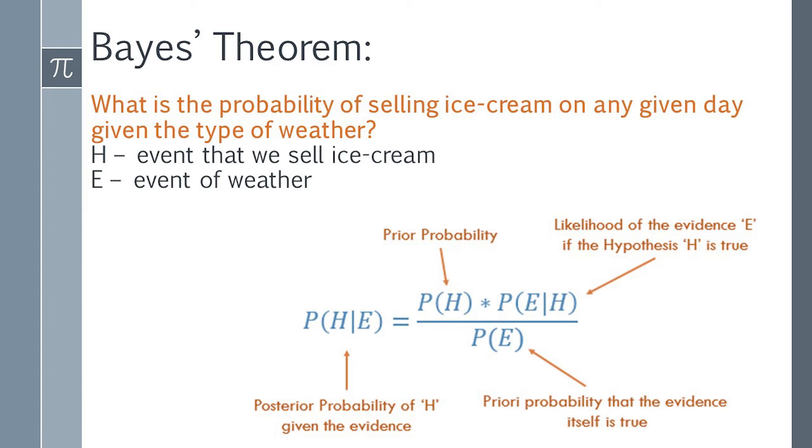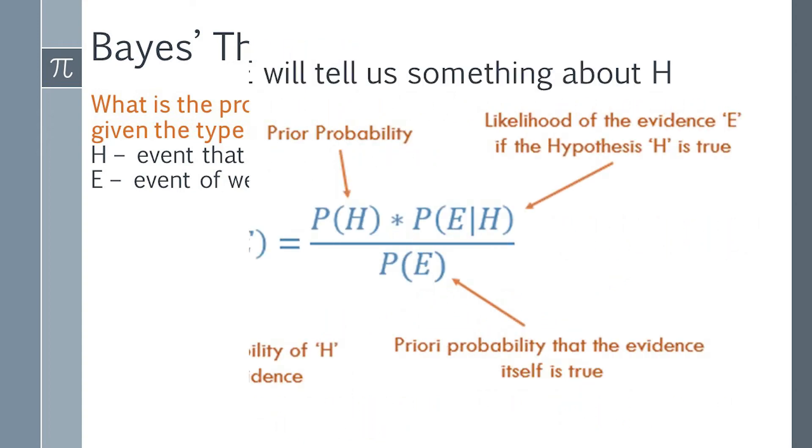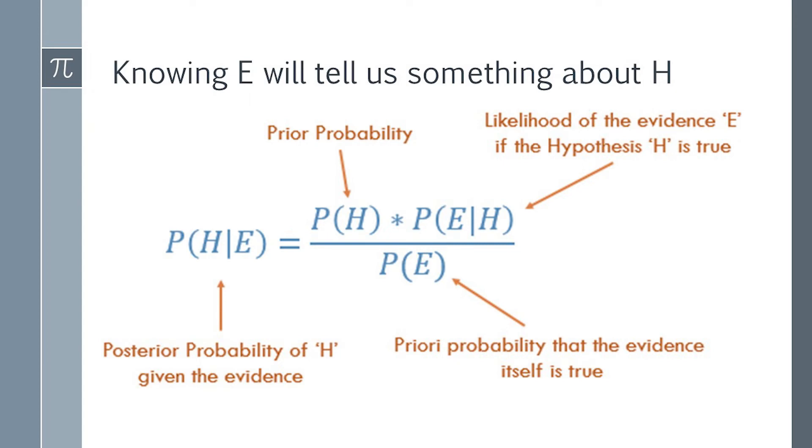So my P(H), which is equivalent to ice cream sale, is equivalent to 30 by 100, which is equivalent to 0.3, prior to me knowing anything about the weather. This is how Bayes' Theorem allows us to incorporate prior information. Knowing something about the past data will tell us something about the future. That is what machine learning is all about. So knowing E will tell us something about H.